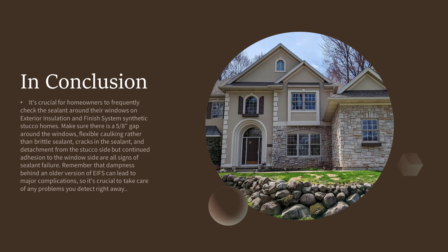In conclusion, it's crucial for homeowners to frequently check the sealant around their windows on EIFS synthetic stucco homes. Make sure there is a 5/8 inch gap around the windows, use flexible caulking rather than brittle sealant, and watch for cracks or detachment from the stucco side. Remember that dampness behind an older version of EIFS can lead to major complications, so take care of any problems you detect right away.